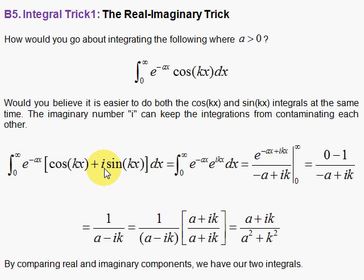So when I get the answer, whatever is real must have been coming from the cosine kx integration, and whatever is hitting the i comes from the sine kx. And, hey, you get the sine kx integral as a bonus.